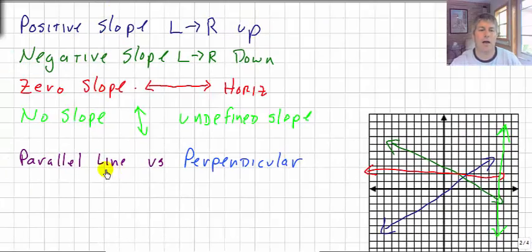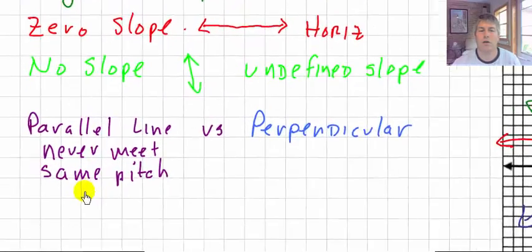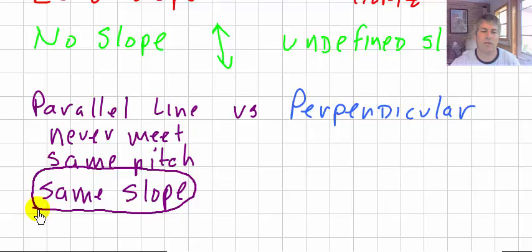So, let's move on, let's talk about parallel lines and perpendicular lines. Well, parallel lines, you guys know parallel lines never meet, so if they never meet, they must have the same steepness, or the same pitch, or the same rate of change. Well, if they have the same steepness, the same pitch, and they never meet, they must have the same slope, so two lines have the same slope, then they're parallel, and if two lines are parallel, then they must have the same slope.